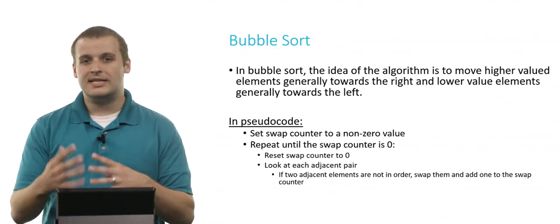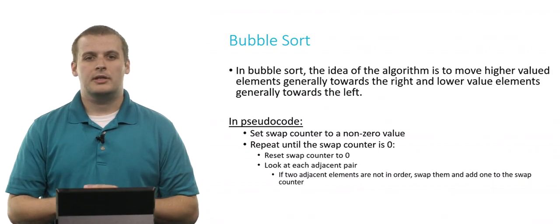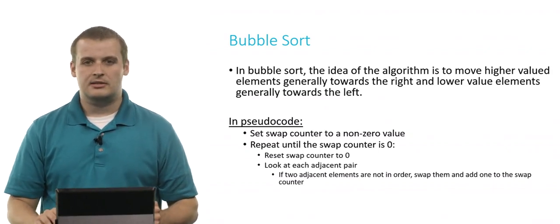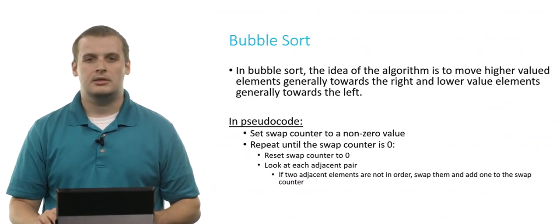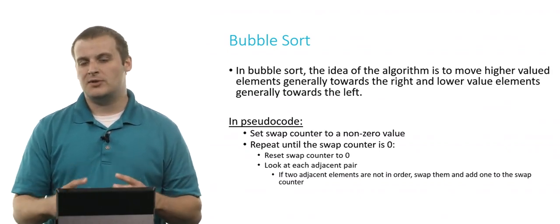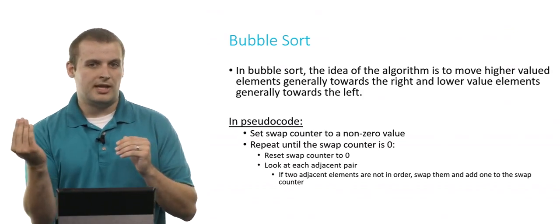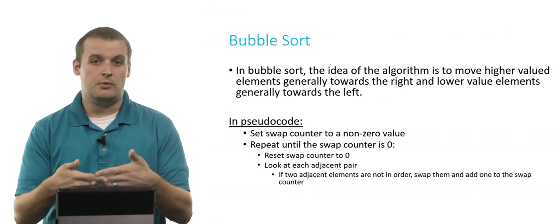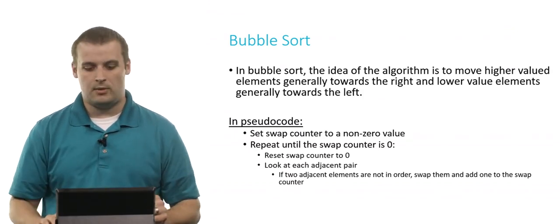Reset the swap counter to zero if it's not already zero. Then look at every adjacent pair of elements. If those two elements are not in order, swap them and add one to the swap counter. This will move lower valued elements to the left and higher valued elements to the right, effectively doing what we want to do.